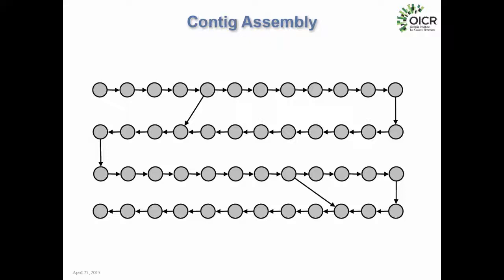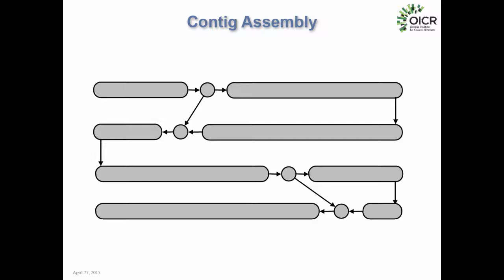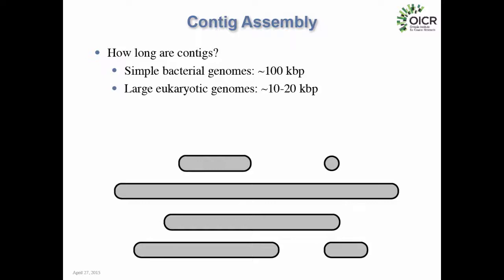After graph cleanup, we build contigs by compacting all chains of vertices that can be unambiguously merged together. The resulting contigs vary in length: some are long, some represent single branch-point vertices. The assembler finds unambiguous genome sections and assembles them. For simple bacterial genomes, contigs may be a few hundred thousand bases; for large difficult genomes like human, contigs are typically gene-sized — on the order of 10 to 20 kilobases.